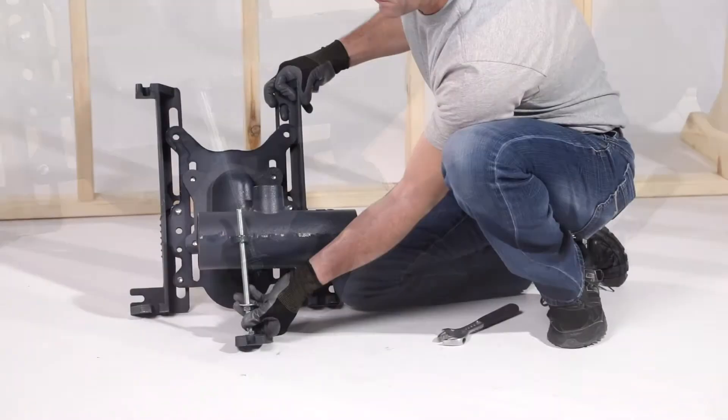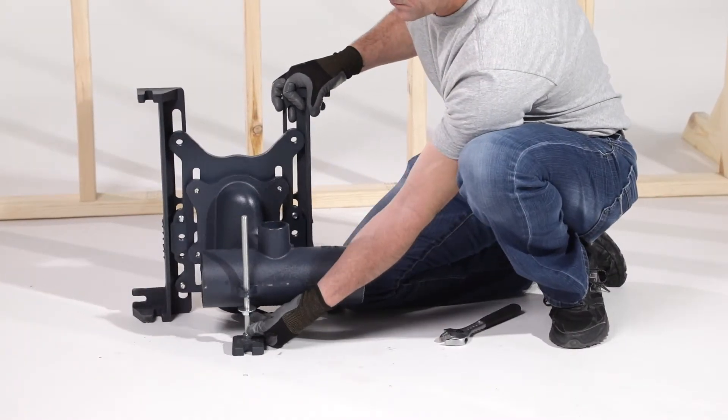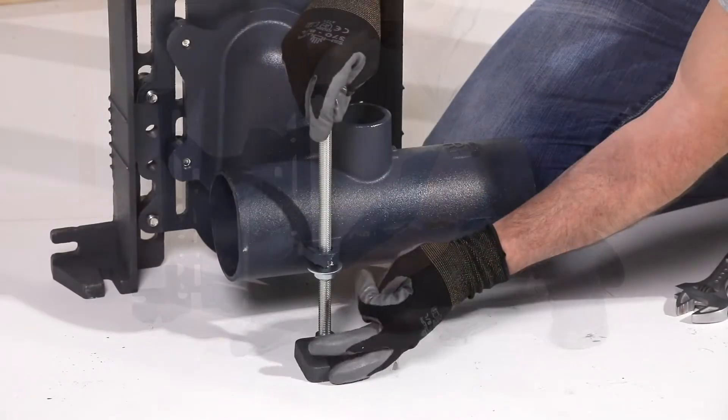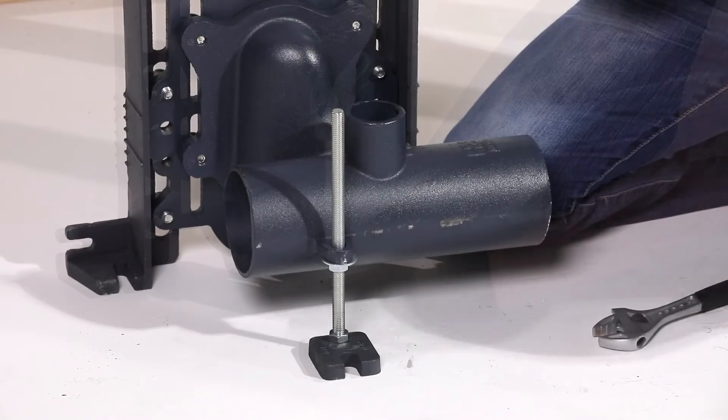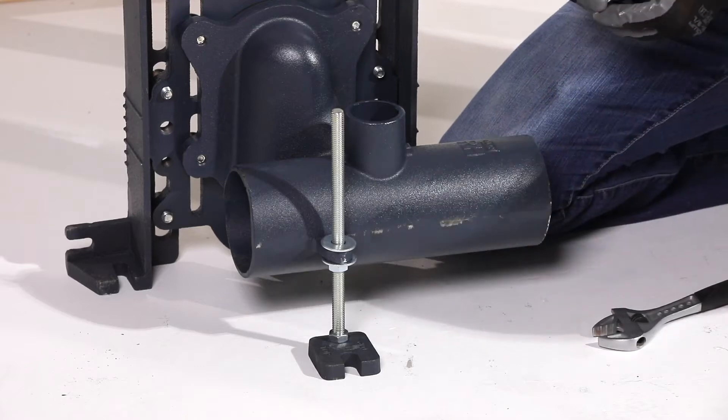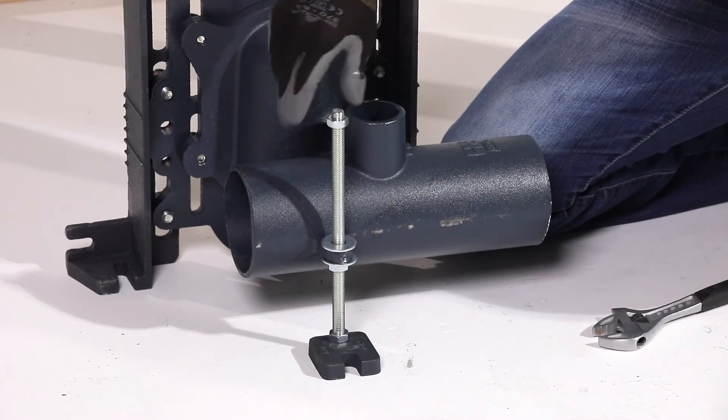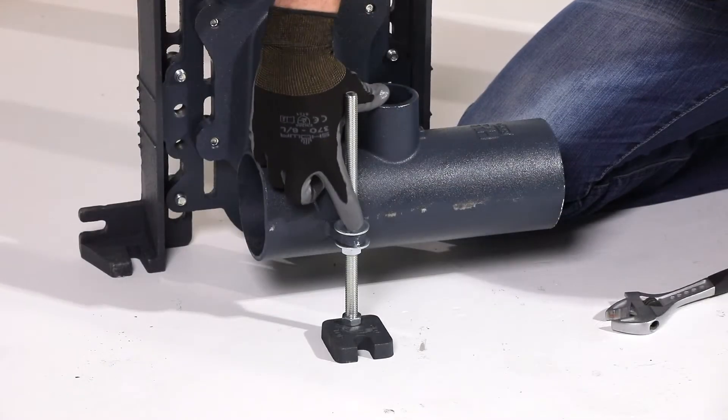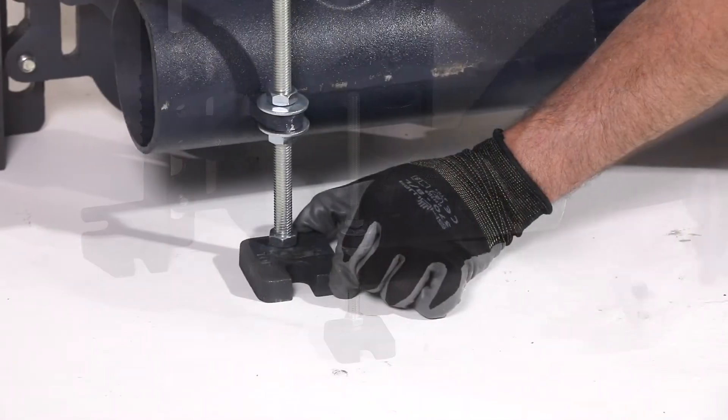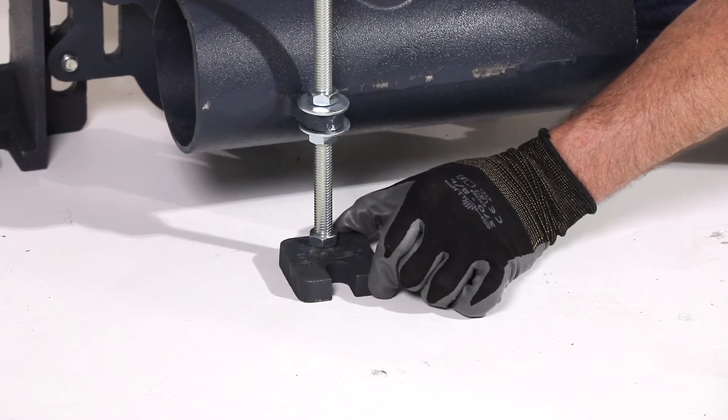Insert the threaded rod up through the underside of the rear lug. Add an additional washer and nut on the top of the all-thread rod. Before you tighten the nuts, check if the anchor foot sits level on the floor.